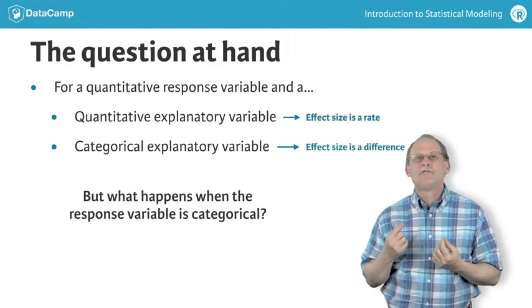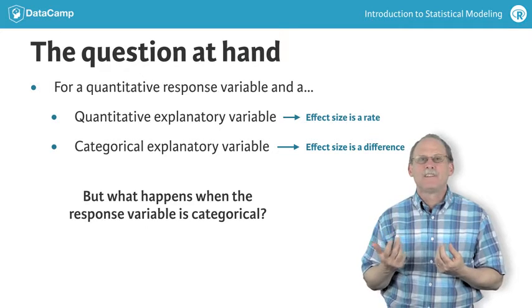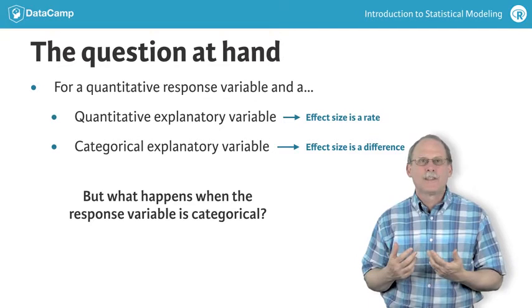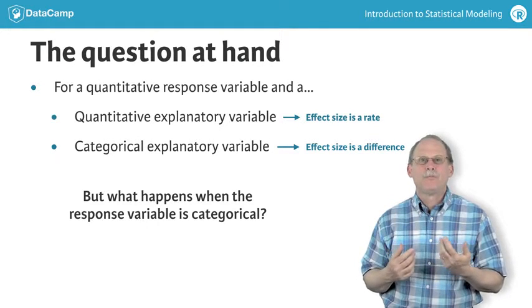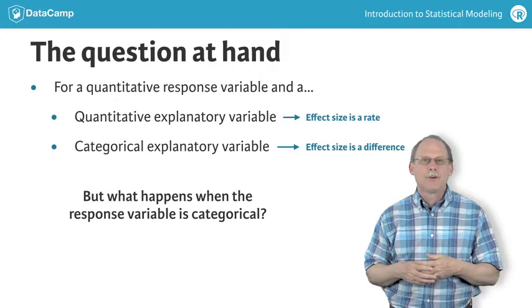What happens when the response variable is categorical? That is, when the output is one of a set of named levels instead of a number. This is more than a technical question. It goes to the heart of what should be the output of a model function for a categorical response variable.